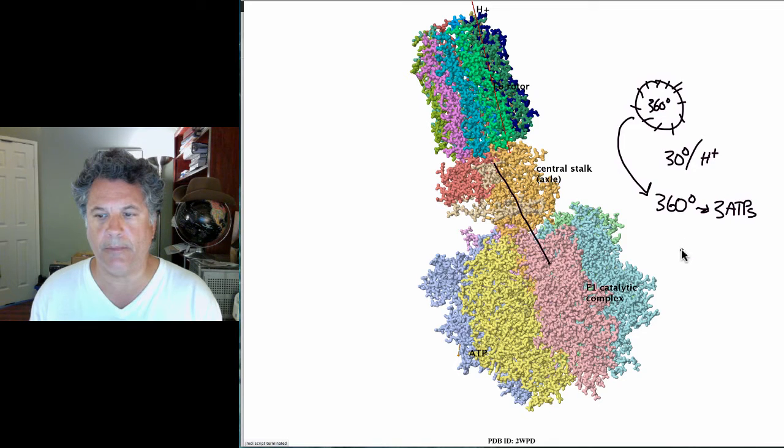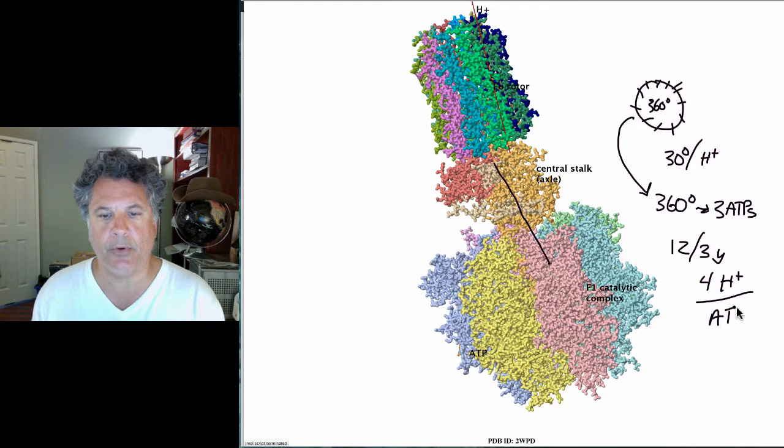If there are 12 subunits, that is 12 protons being carried around, and there are three ATPs produced per full rotation, then we must have four hydrogen ions flowing into the matrix per ATP produced.